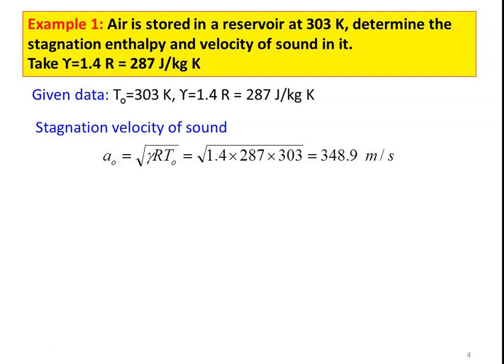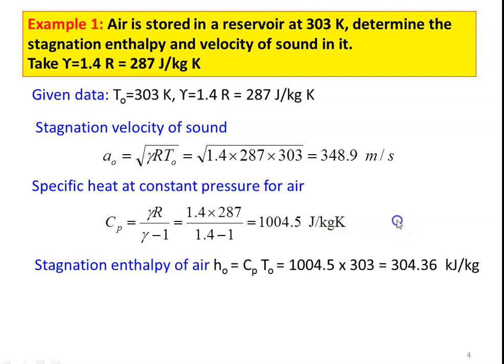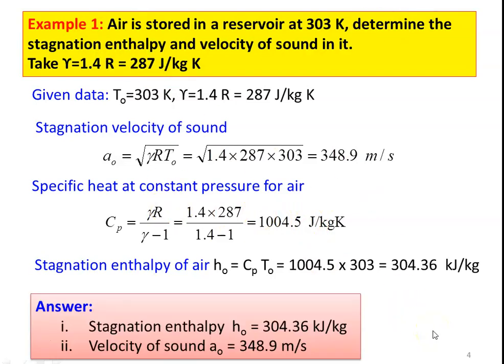The stagnation velocity of sound: A₀ = √(γRT₀) = √(1.4 × 287 × 303) = 348.9 m/s. Specific heat at constant pressure: Cp = γR/(γ-1) = (1.4 × 287)/(1.4 - 1) = 1004.5 J/kg·K. Stagnation enthalpy: H₀ = Cp × T₀ = 1004.5 × 303 = 304.36 kJ/kg. Answers: H₀ = 304.36 kJ/kg, A₀ = 348.9 m/s.